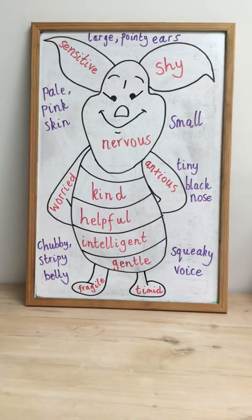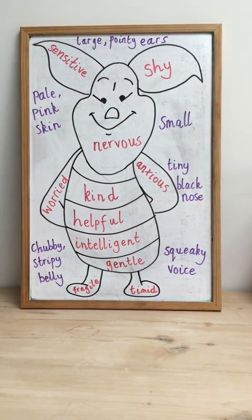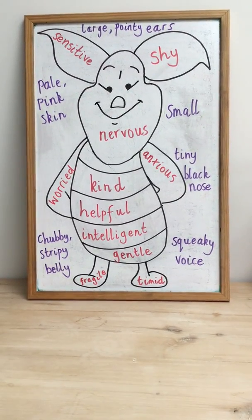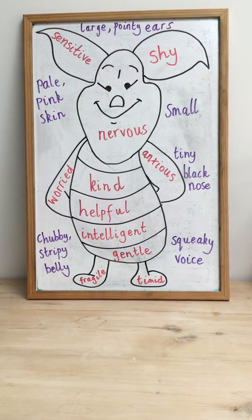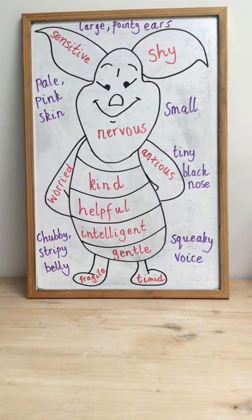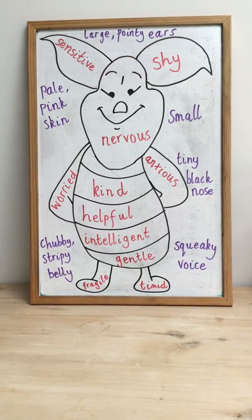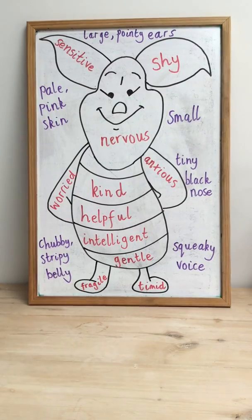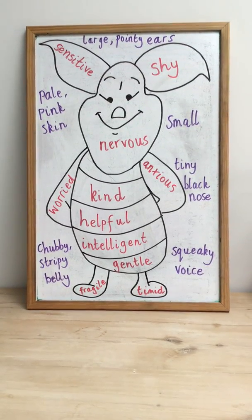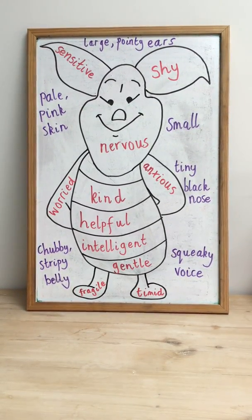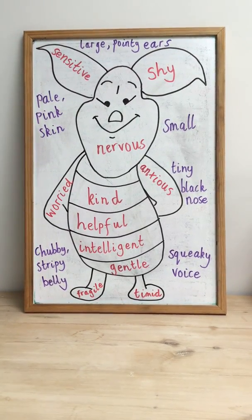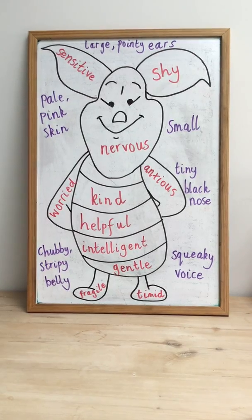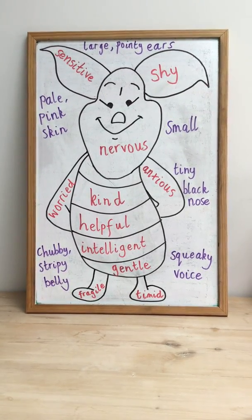Your job today is going to be to choose a different book character from any book. I'd like you to draw an outline of them, and inside of the outline I want you to think of as many describing words to describe your character's personality — what they're like on the inside. Outside of the outline I want you to think of as many adjectives to describe what your character looks like. It would be great if you don't tell me the name of your character and I will see if I can guess who they are.